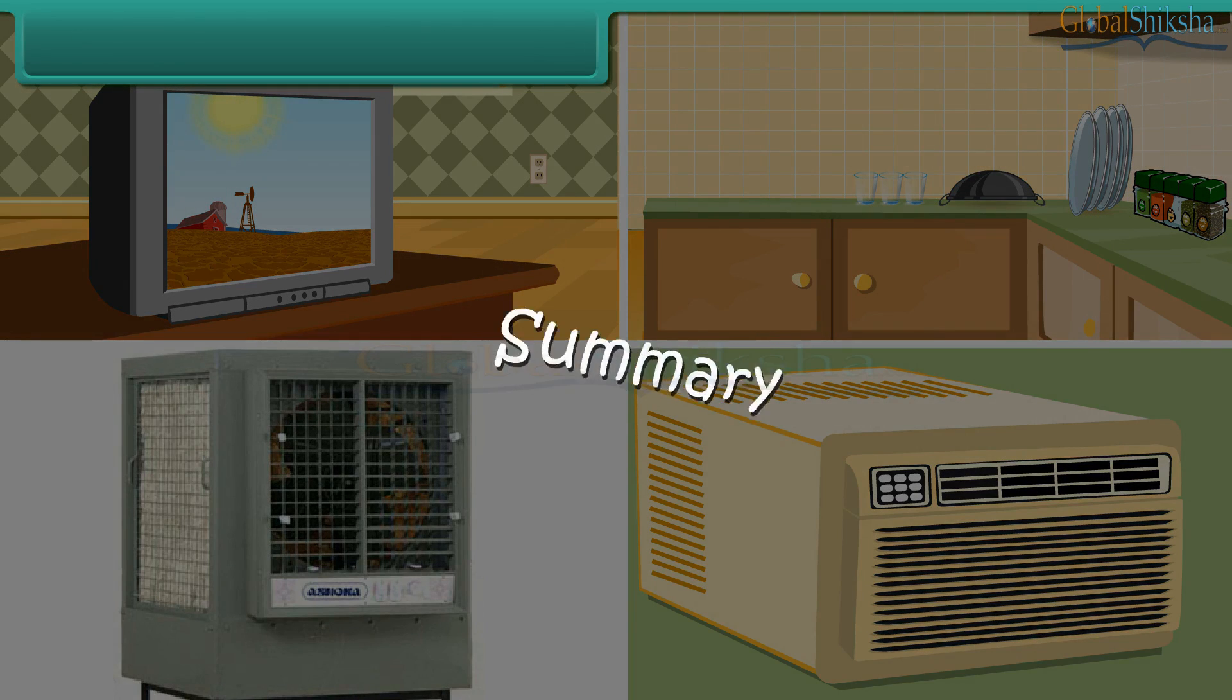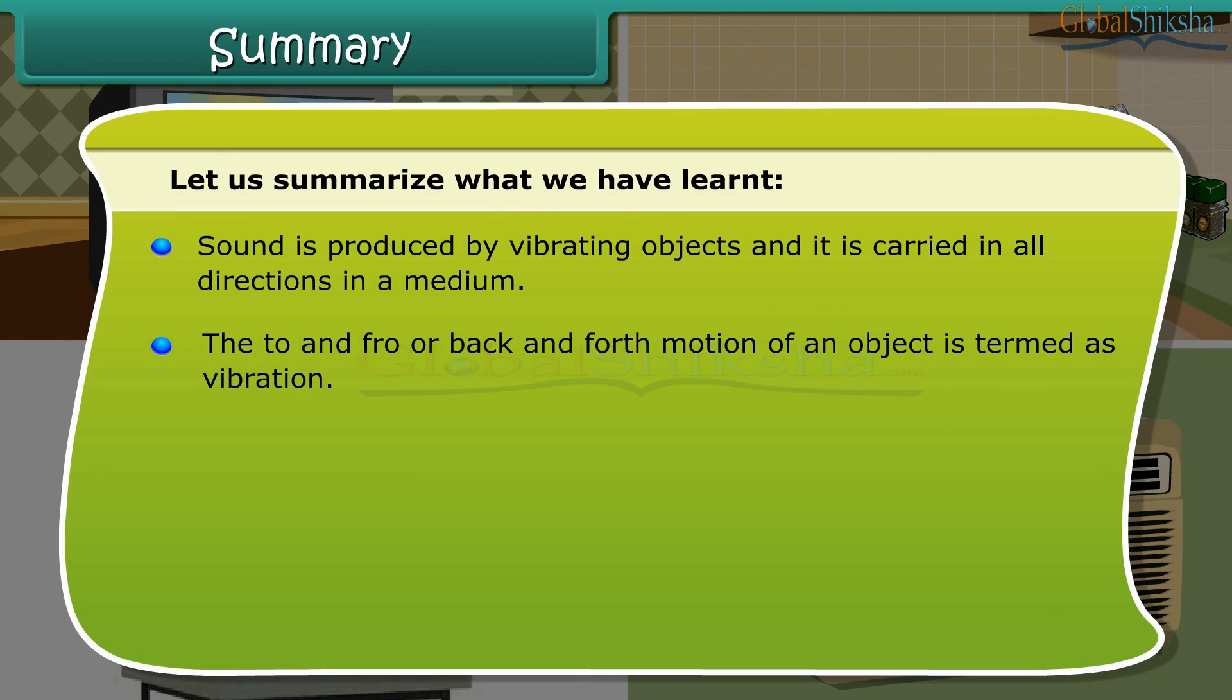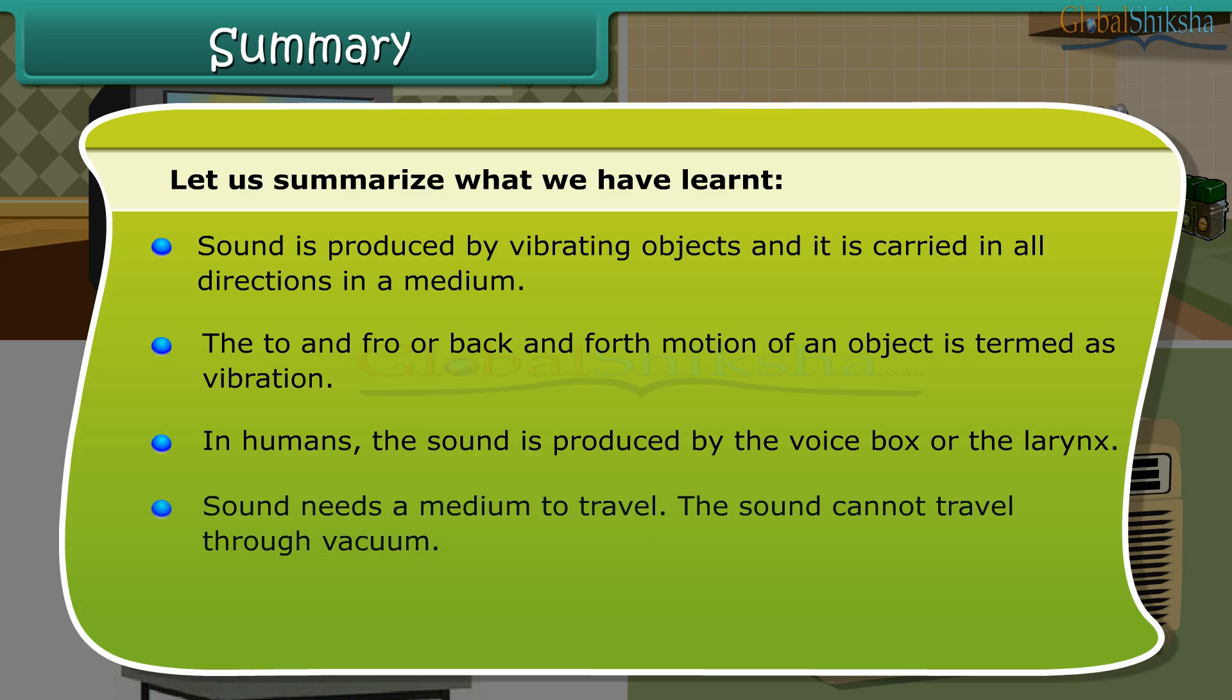Summary. Let us summarize what we have learned. Sound is produced by vibrating objects and it is carried in all directions in a medium. The to and fro or back and forth motion of an object is termed as vibration. In humans, the sound is produced by the voice box or the larynx. Sound needs a medium to travel. The sound cannot travel through vacuum.